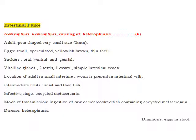The infecting stage is the encysted metacercaria, found in the tissue of the second intermediate host — fishes. The mode of transmission is disease that occurs after ingestion of raw or undercooked fish containing encysted metacercaria.